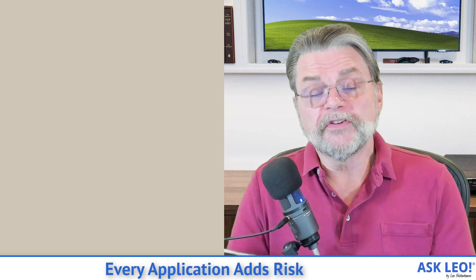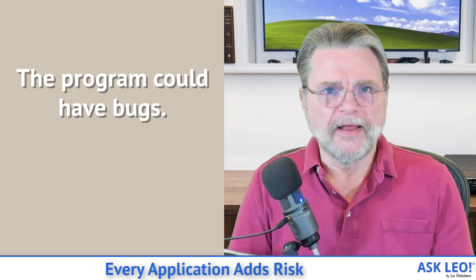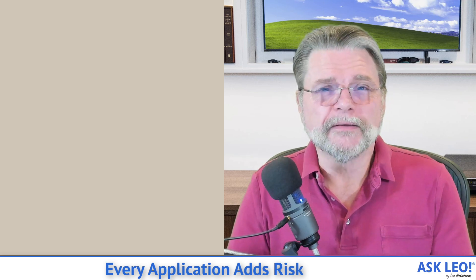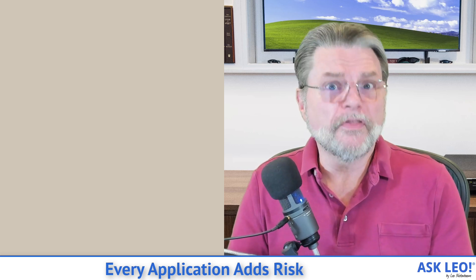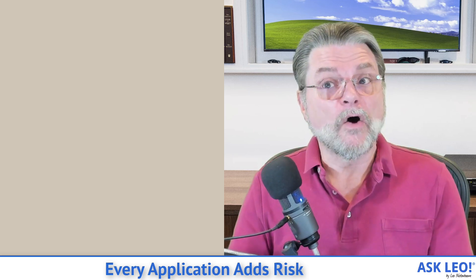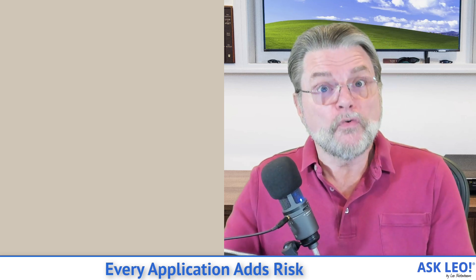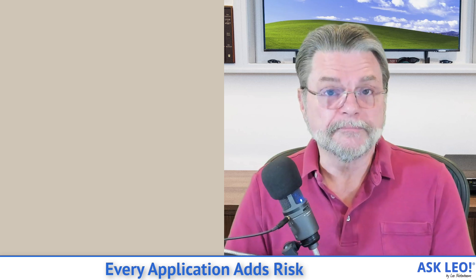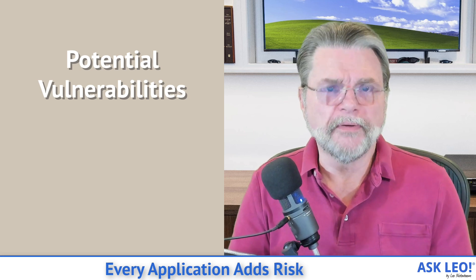The indirect risk is simply this: the application or software that you're installing may be perfectly wonderful, wonderfully benign, and have no issues with it whatsoever — except there's a bug or two, or a design flaw, or something that nobody thought to think of. There's a scenario they didn't account for, that might allow other, more malicious software a way to make things happen that shouldn't happen. In other words, you're adding risk by adding potential vulnerabilities, even by installing otherwise benign software.